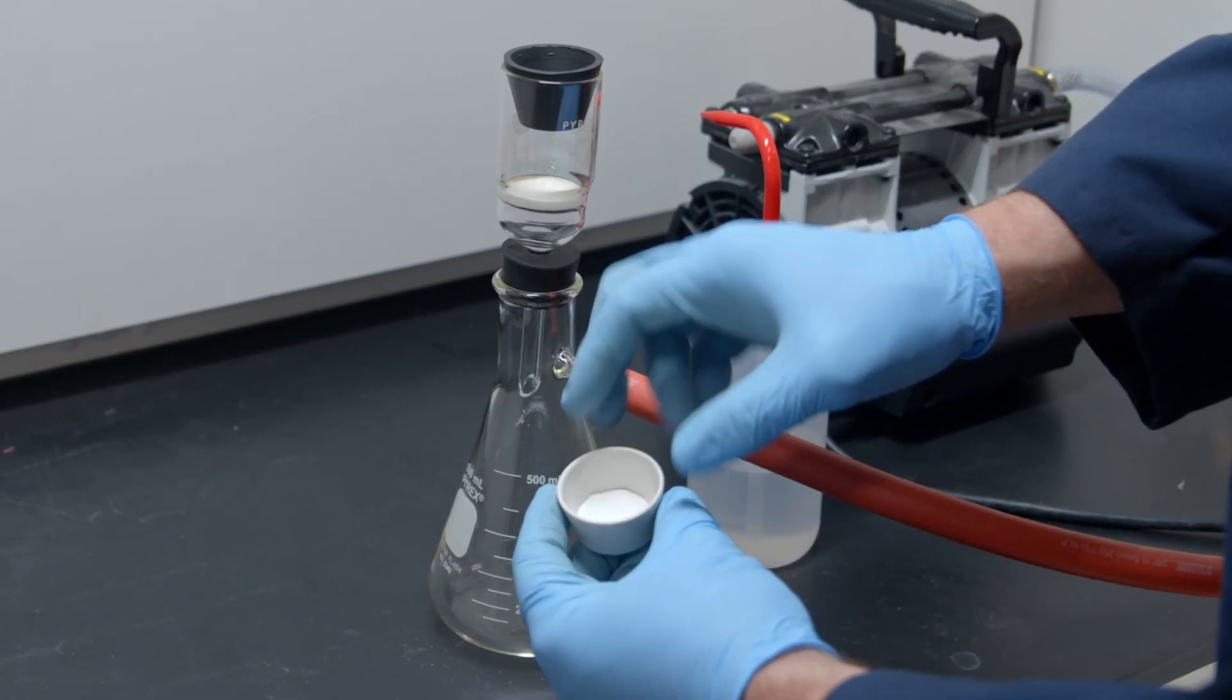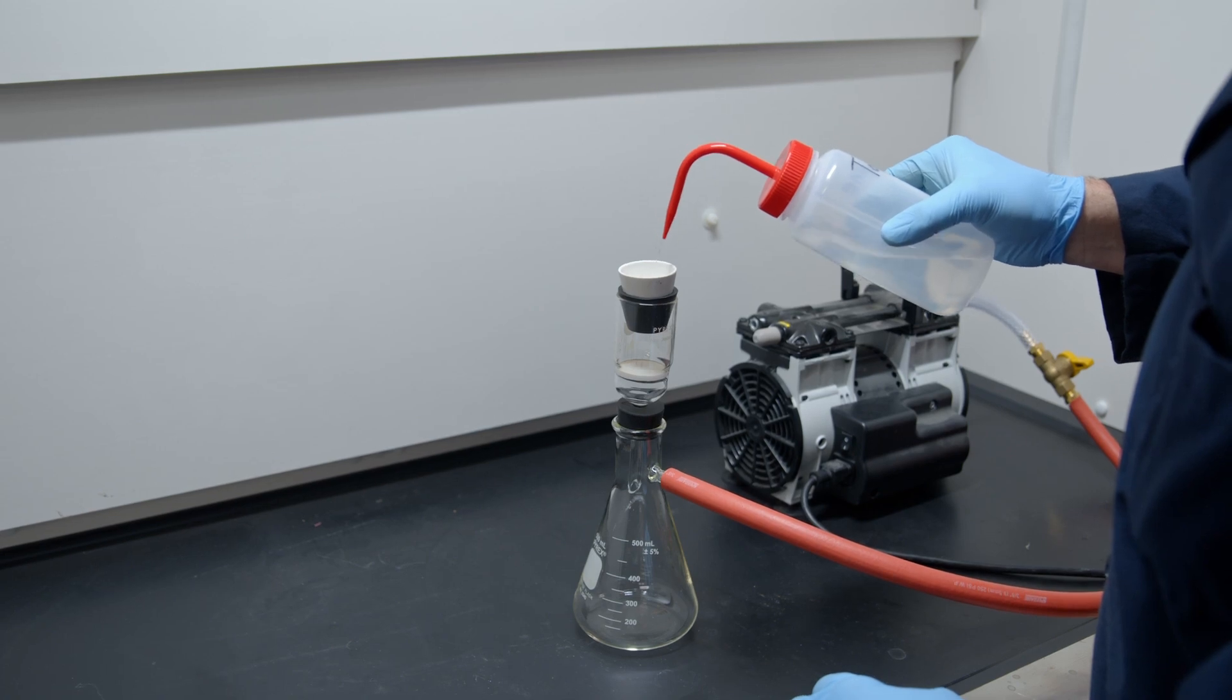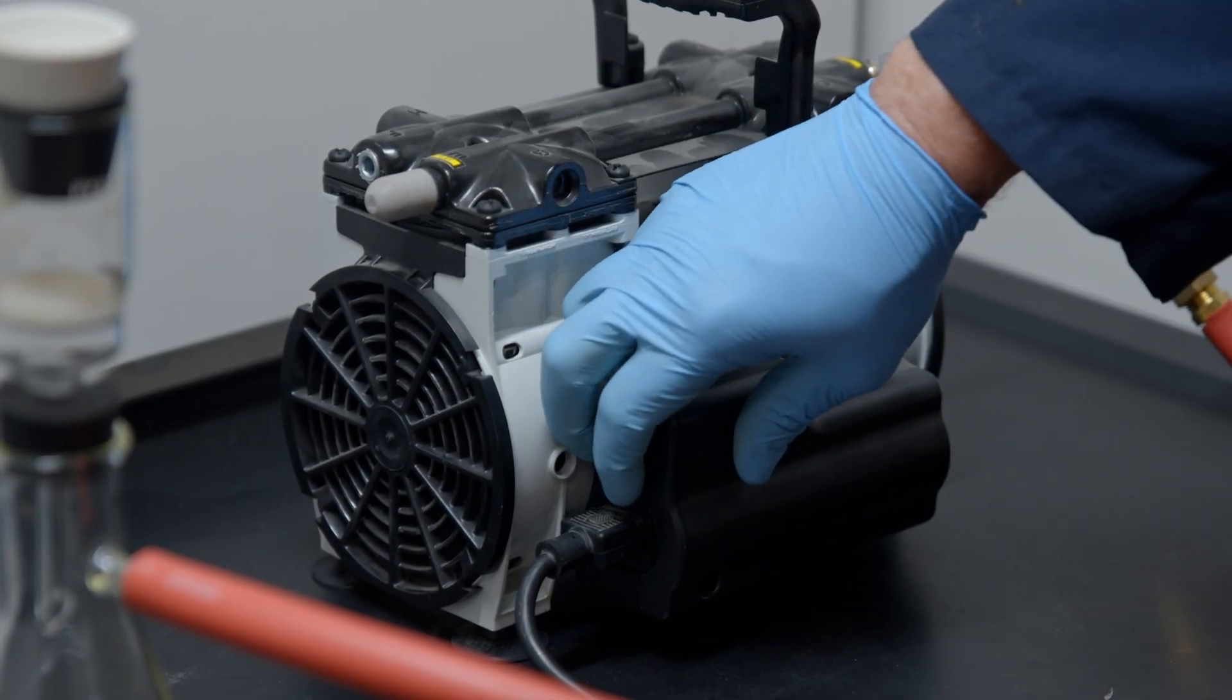Place the filter in the crucible, moisten with solvent, and seat the filter firmly in the bottom with light suction.